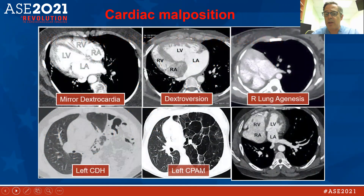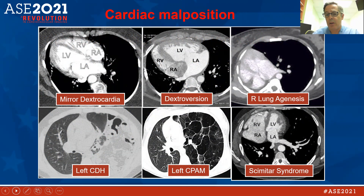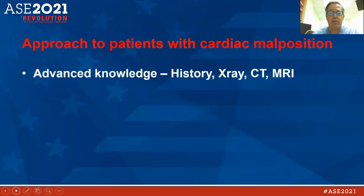There are many different orientations of the heart in these different types of problems. In some entities the heart is shifted to the right and the apex is pointed to the right, but in some — like scimitar syndrome — the heart is rightward but the apex is shifted to the midline.